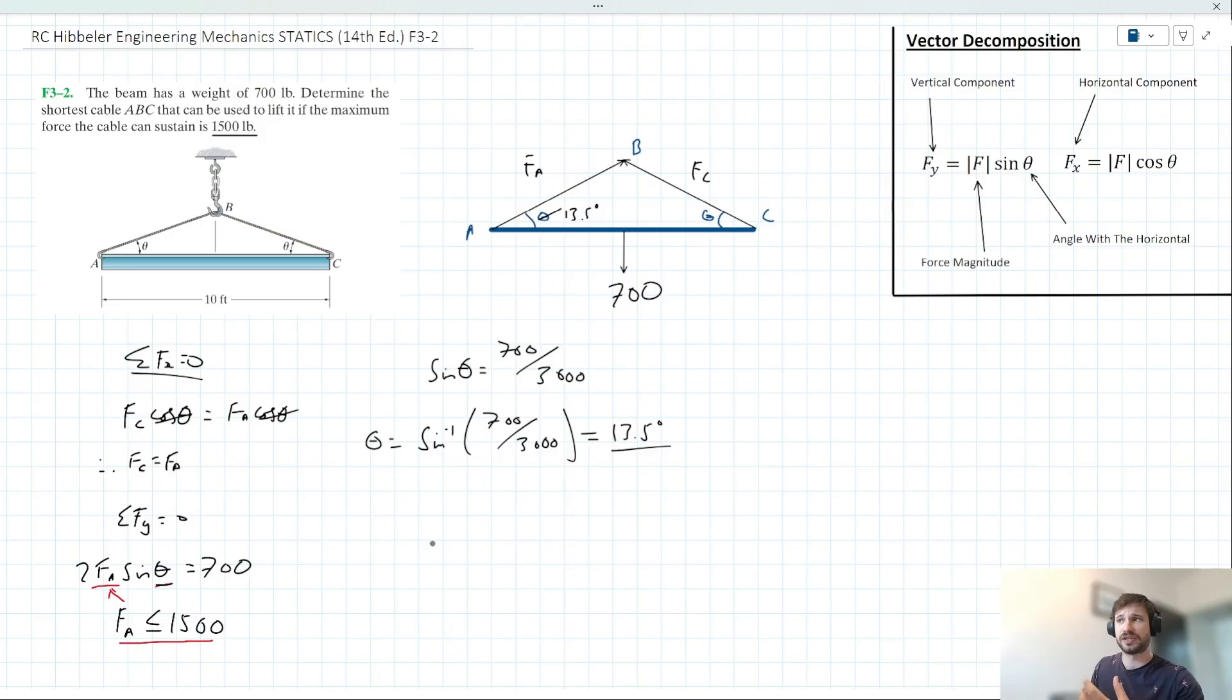The question is asking us, determine the shortest cable ABC. So in other words, we're being asked to determine the length of ABC, assuming this angle here.